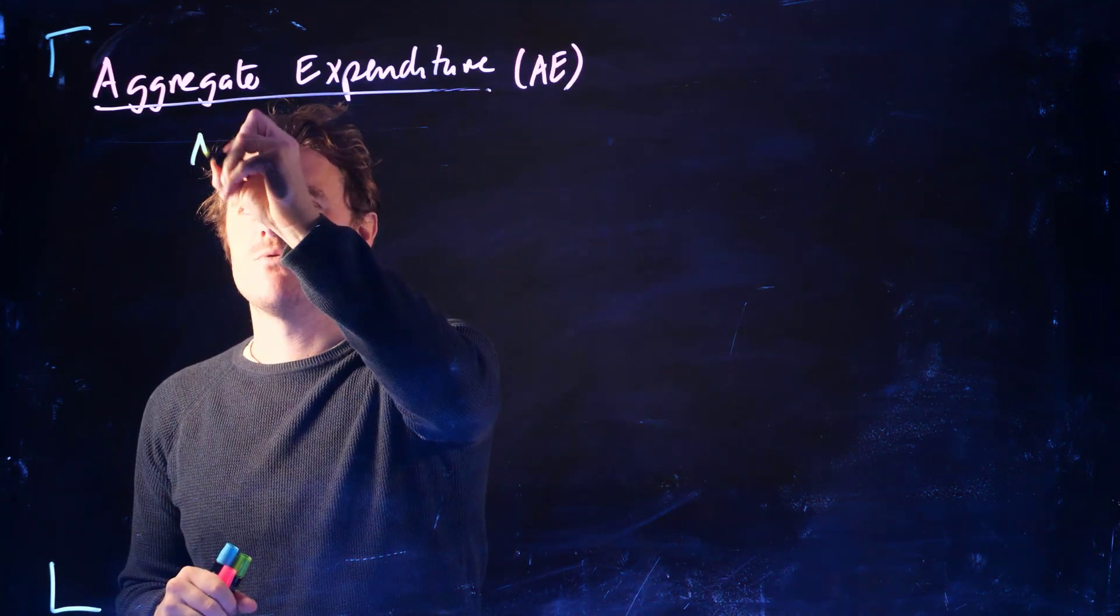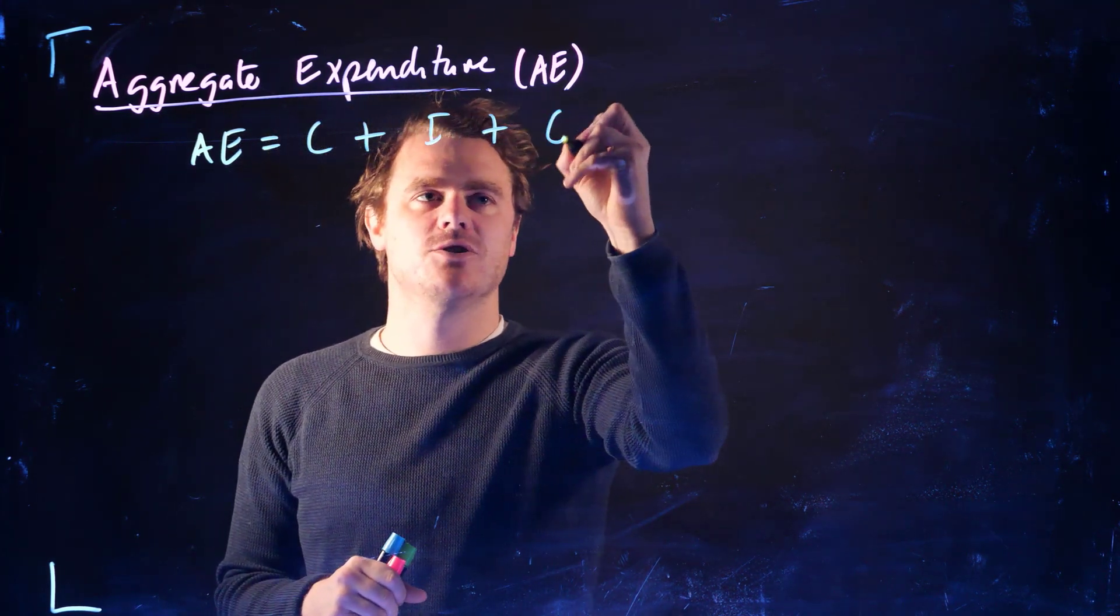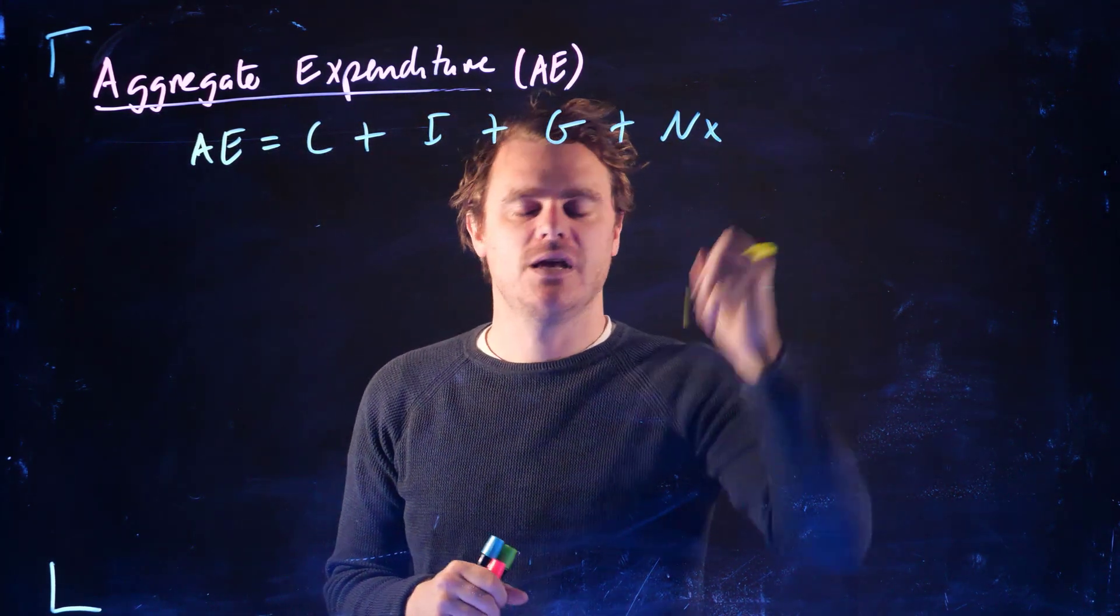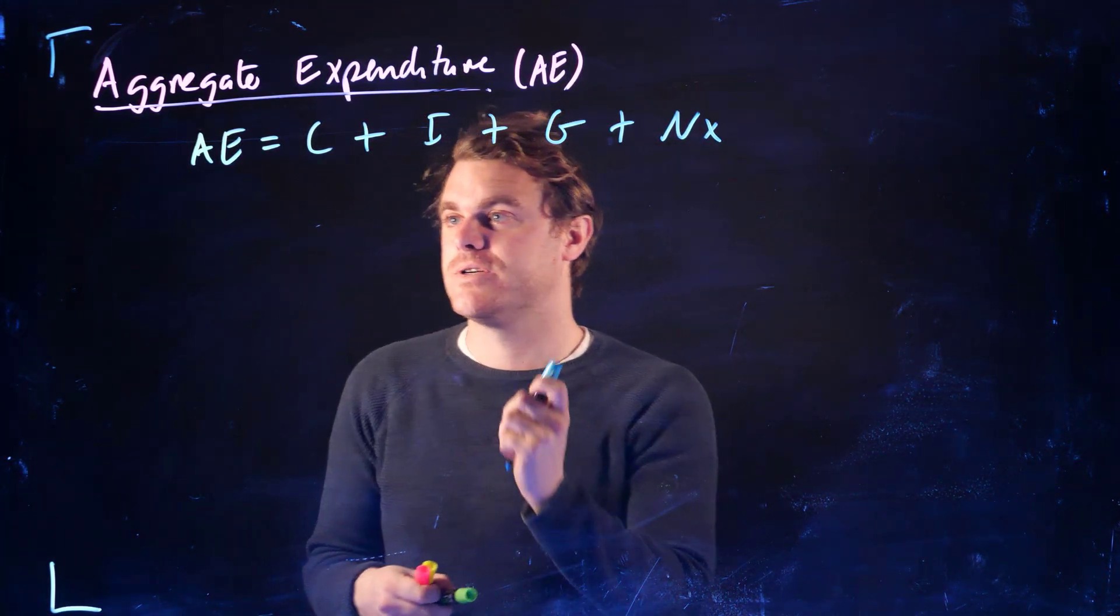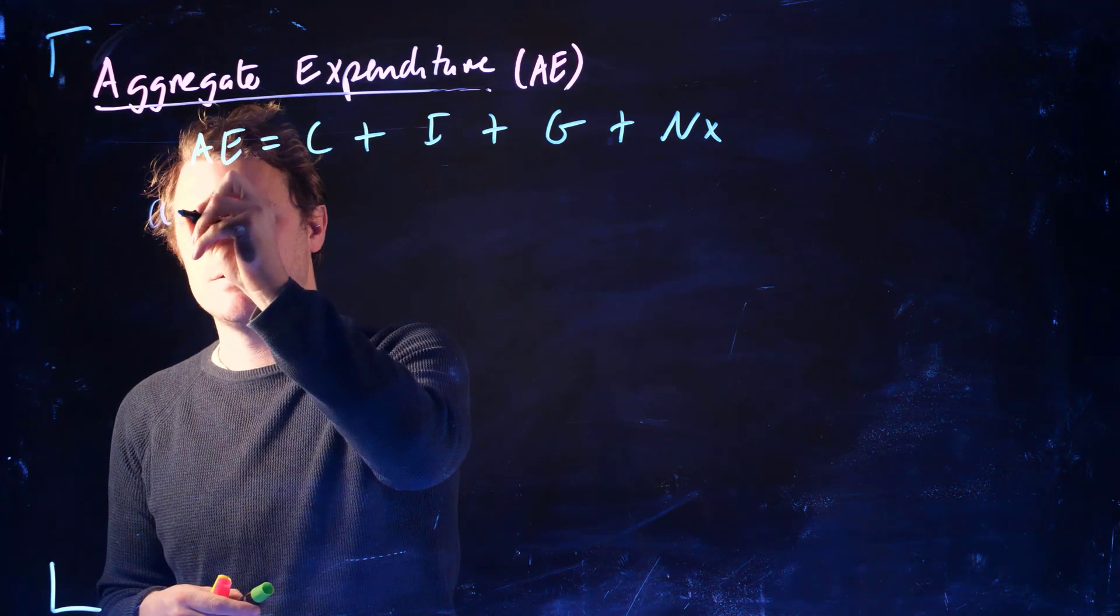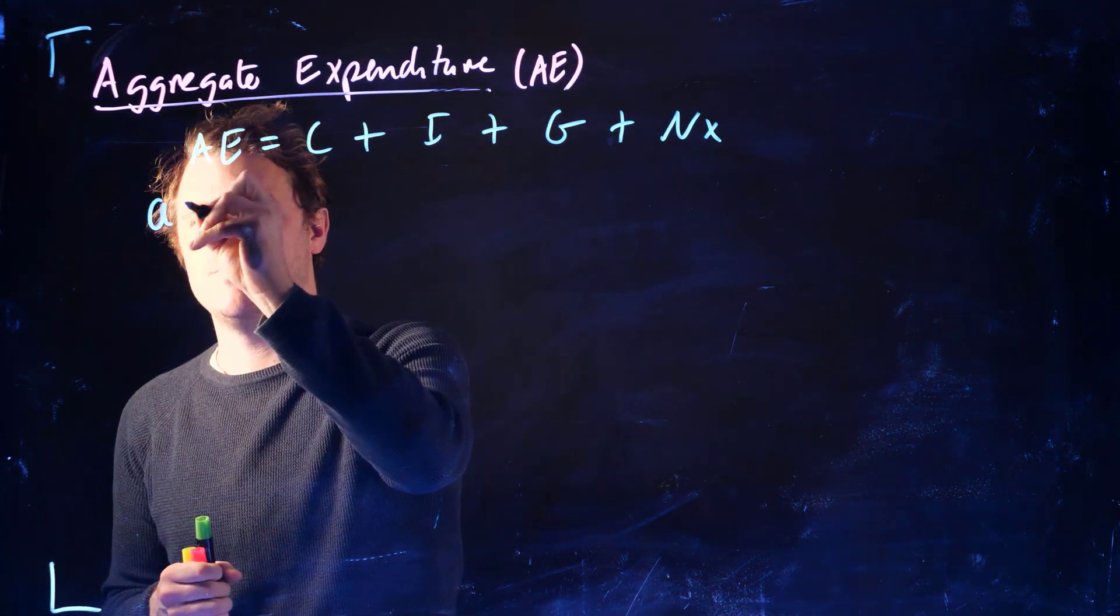All right, so again, let's just write out our aggregate expenditure function. This is going to be useful for me to be able to refer to it as we go through these assumptions. This will look the same, so I'll get a different color.